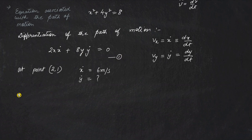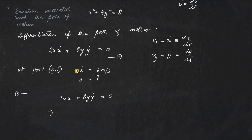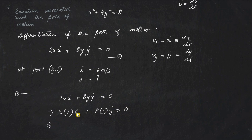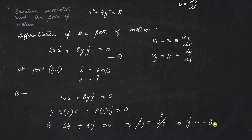Using equation 1: 2xẋ + 8yẏ = 0, I substitute the given values. x = 2, ẋ = 6 m/s, y = 1, and ẏ is unknown. This gives 2×2×6 + 8×1×ẏ = 0, so 24 + 8ẏ = 0, which leads to ẏ = −3 m/s. So the y-component of velocity is −3 m/s. In general, if given the equation of motion, just take the time derivative to find velocity components.